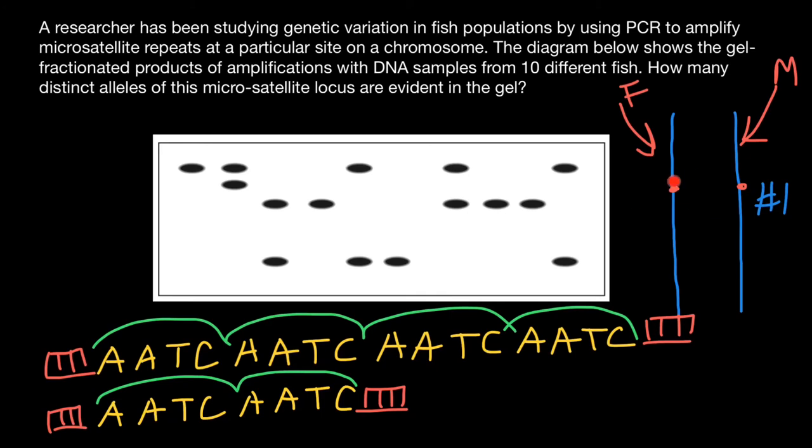But it may also happen that at this locus, we may have molecules of the same size. If we have molecules of the same size, we would see only one band. You see, we have one fish, two, three, four, five, six, seven, eight, nine, ten. But some fish have only one band, some have two bands.